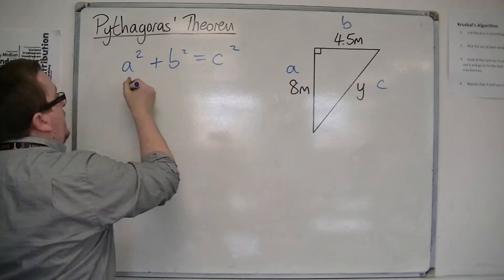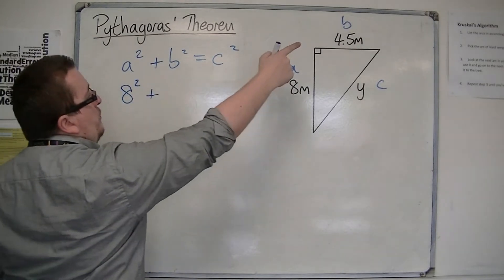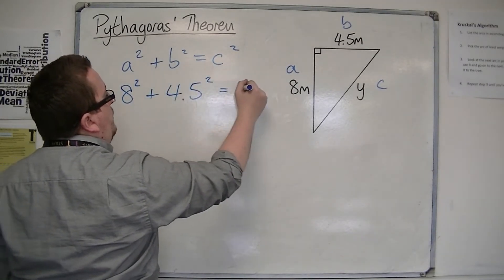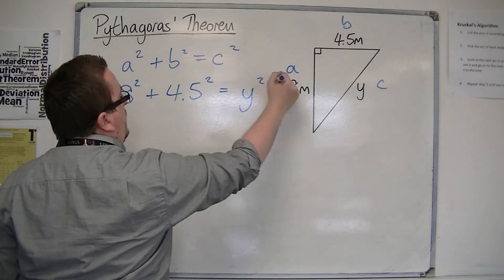So we have a², that's 8². We've got b², so 4.5². And we've got c², which is now y, so y².